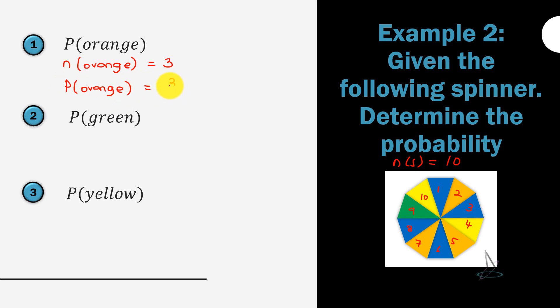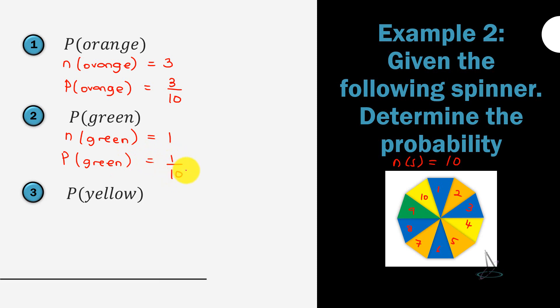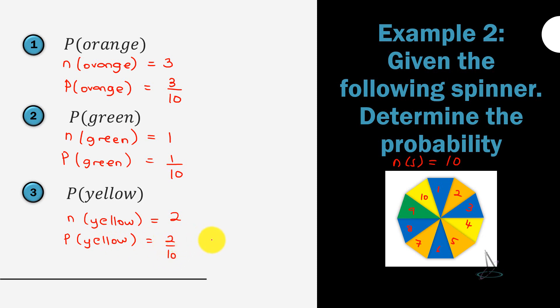For the probability of green: there is only 1 green section, so n(green) = 1 and P(green) = 1/10. For the probability of yellow: sections 10 and 4 are yellow, so n(yellow) = 2 and P(yellow) = 2/10, which simplifies to 1/5. Always leave your answer in simplest form.